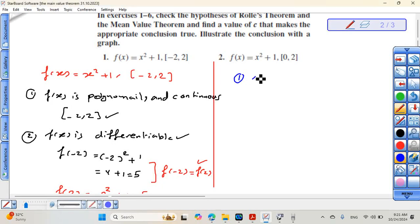Condition 1: f of x is continuous on the closed interval from 0 to 2. This is satisfied because it's polynomial, and polynomials are continuous everywhere, then continuous on the closed interval from 0 to 2. Also, f of x is differentiable on the open interval from 0 to 2.